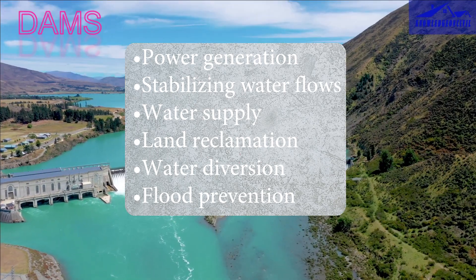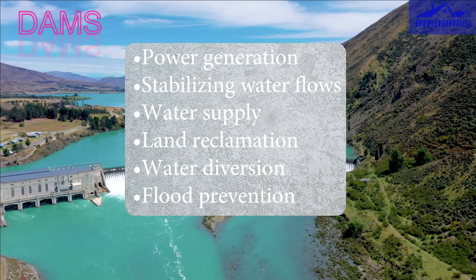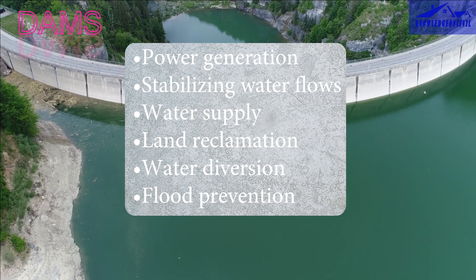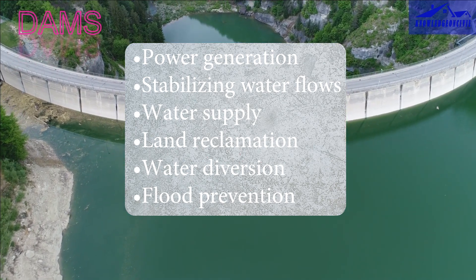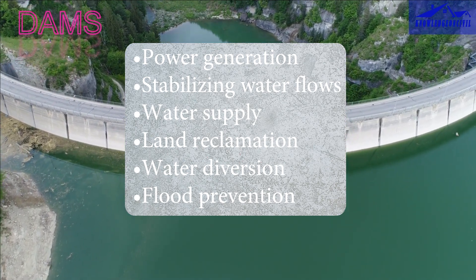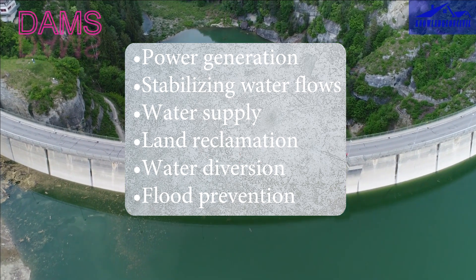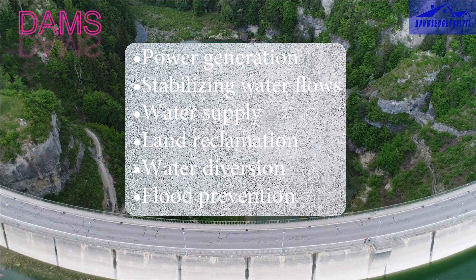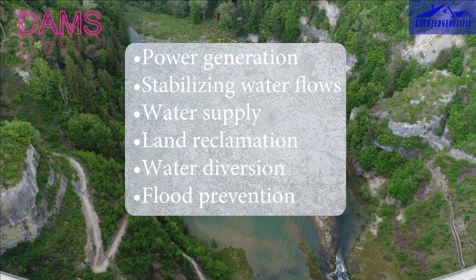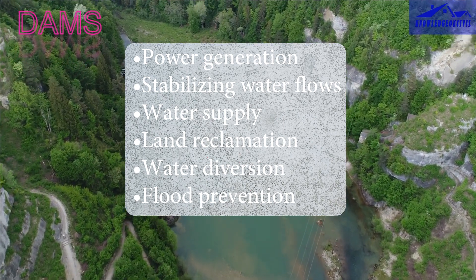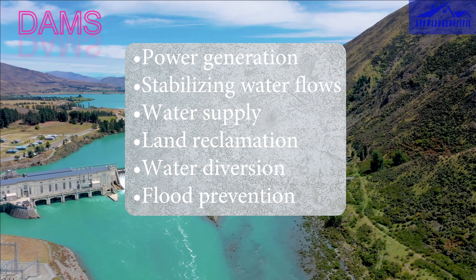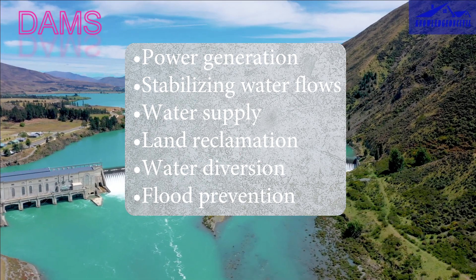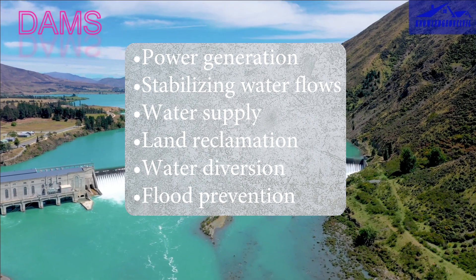Dams can redirect water from one area to another for various purposes, such as supplying water to arid regions or facilitating irrigation projects. Water diversion helps address regional water scarcity issues. Dams also control and mitigate flooding by storing excess water during periods of heavy rainfall or snowmelt, and the controlled release of water downstream can help prevent downstream flooding.